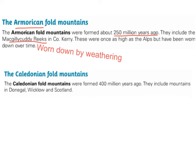We are also going to look at the Caledonian fold mountains. The Caledonian fold mountains were formed 400 million years ago. They include mountains in Donegal, Wicklow, and Scotland.